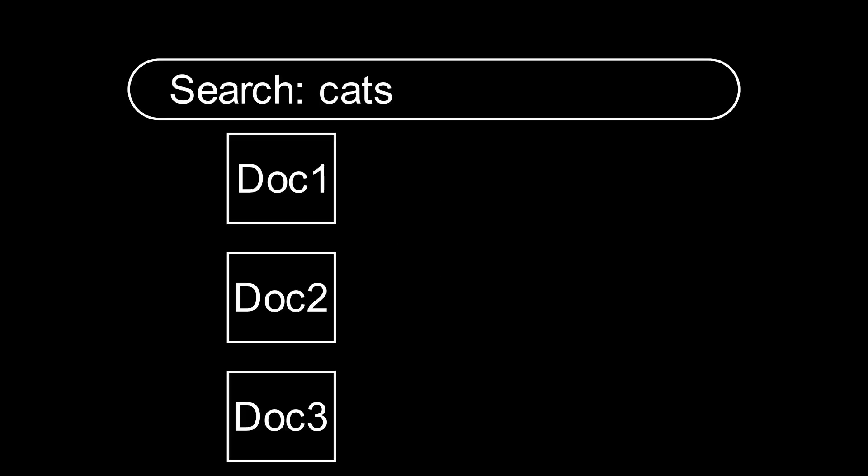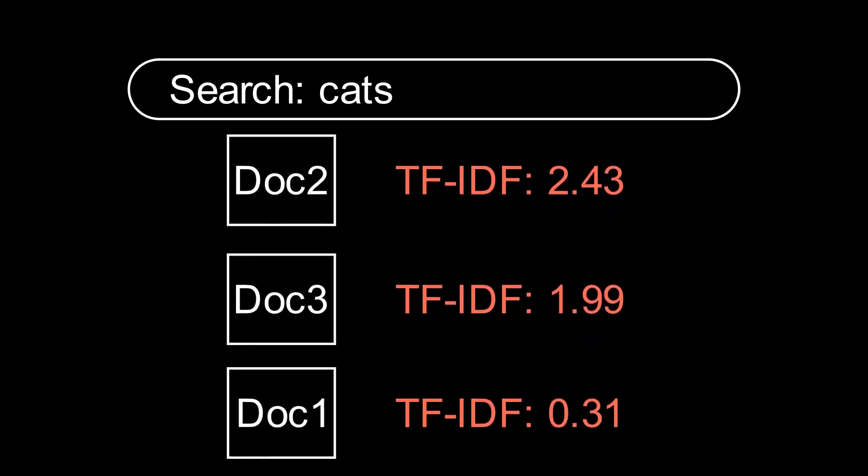One natural language processing task where TF-IDF is useful is searching. For example, if someone is searching on the internet for the word cats, a search engine should return pages with high TF-IDFs for cats, meaning that the word cats is relevant to those documents.